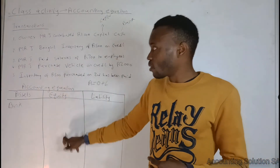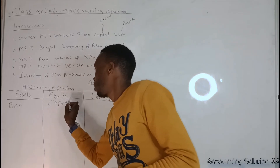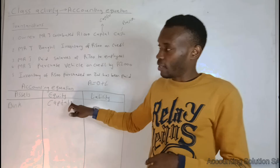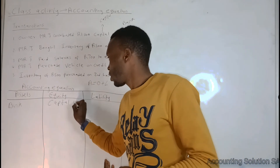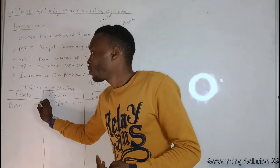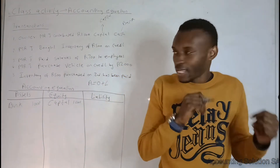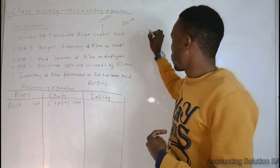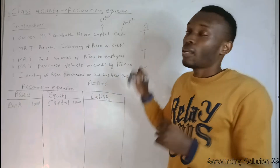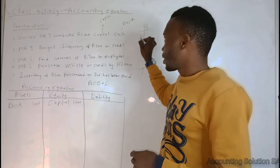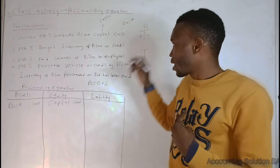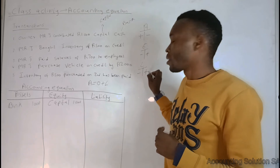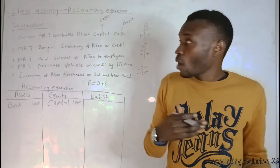Now we are not done — once you write the component in the correct place, we also need to write a sign: plus or minus. Here is the rule: for assets, a debit is an increase (plus) and a credit is a decrease (minus). Equity and liability go opposite to assets — credit is plus and debit is minus. So if we reduce equity, we use a minus sign.